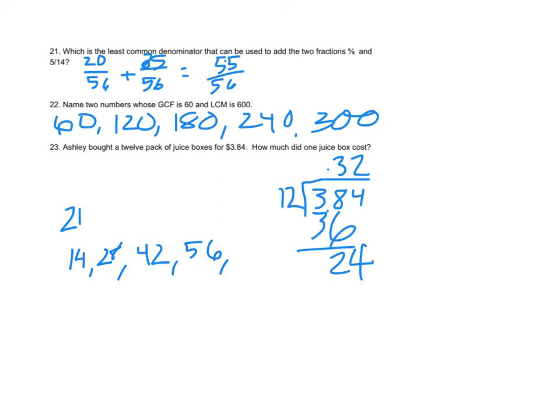What I'm going to do is list multiples of 14, skip counting by 14s. I get 14, 28, 42, and 56. As I'm writing those numbers, I'm asking myself does 8 go into those? 8 goes into 56, so 56 is the lowest common denominator.